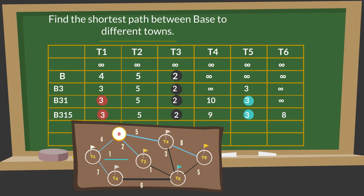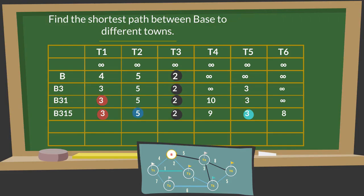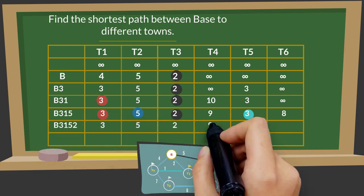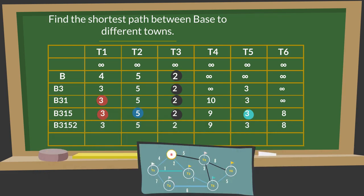Now, town 2 has the smallest working value or distance, so it will be source for next working. We do not find any shorter path to any connected town if we take town 2 as source. So all working values, or distances from base to towns, will remain the same.